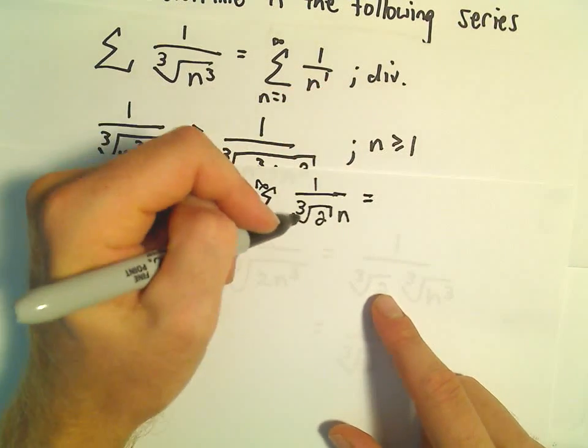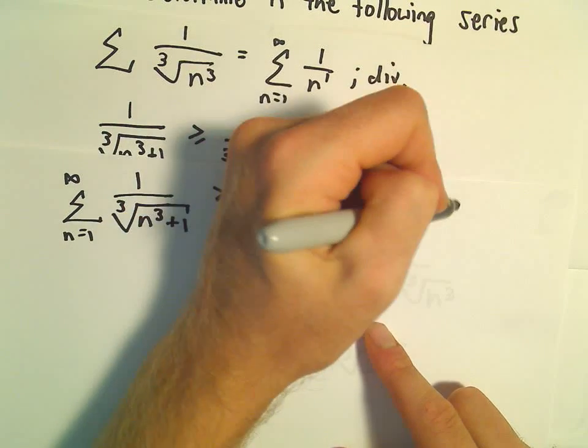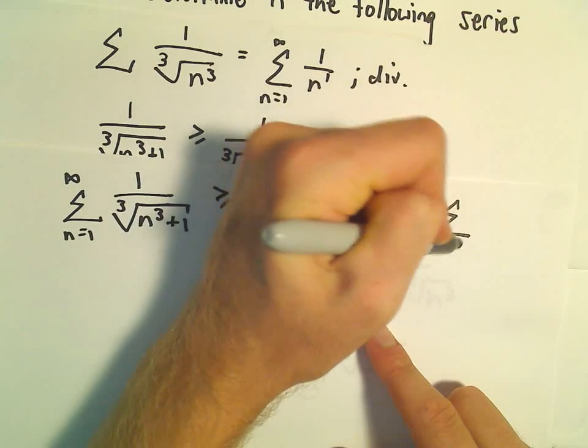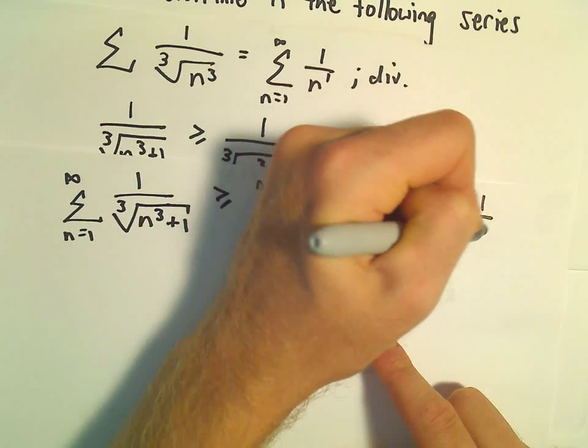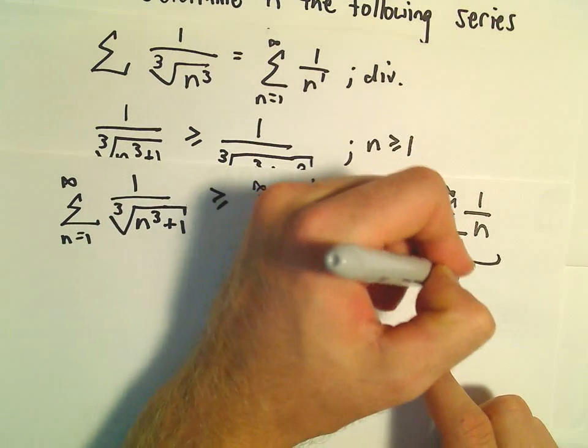But this series, we can just factor the cube root out. So the cube root of 2 can come out front, times the series n equals 1 to infinity of 1 over n. We know that this is a divergent p-series.